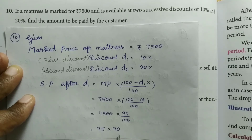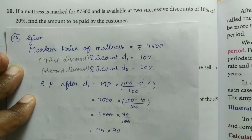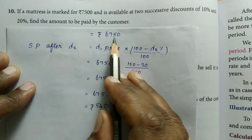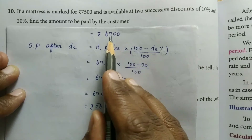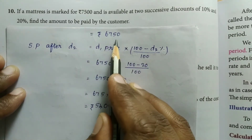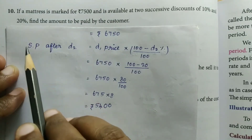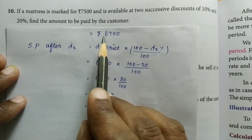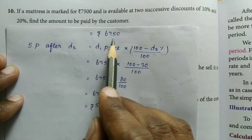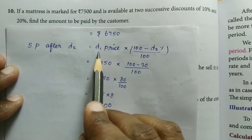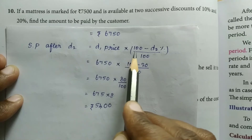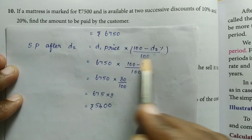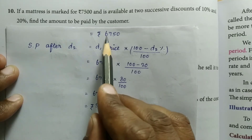The selling price after the first discount D1 is Rs.6,750. Now we apply the second discount D2 of 20%. We take the price after D1, which is Rs.6,750, and apply the formula: 6,750 × (100 − D2%) ÷ 100.